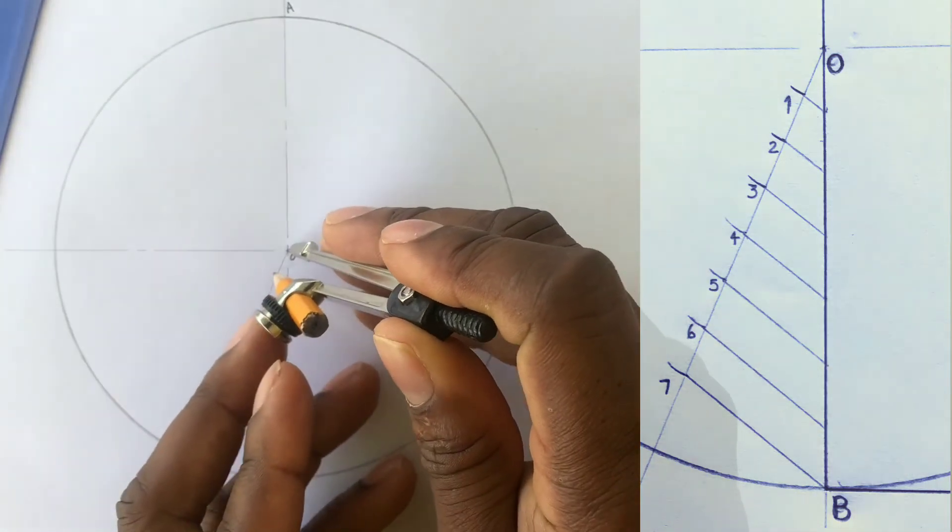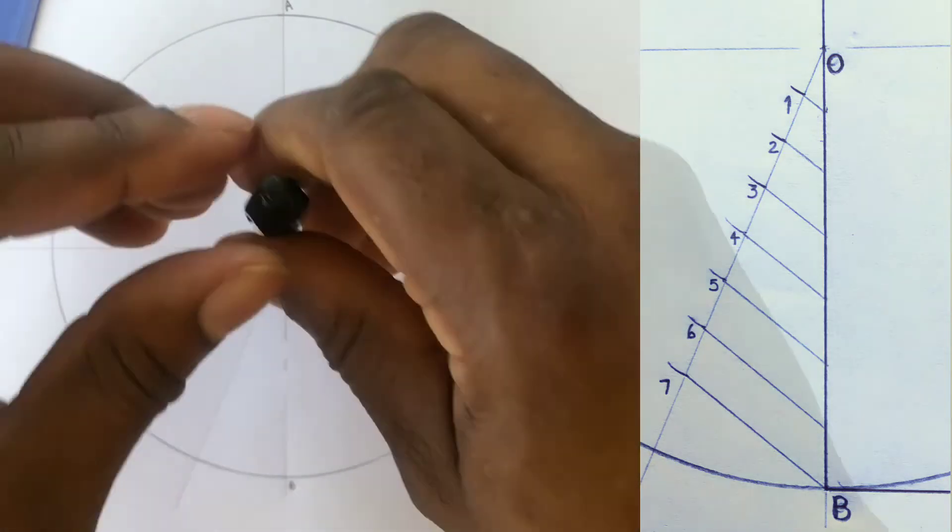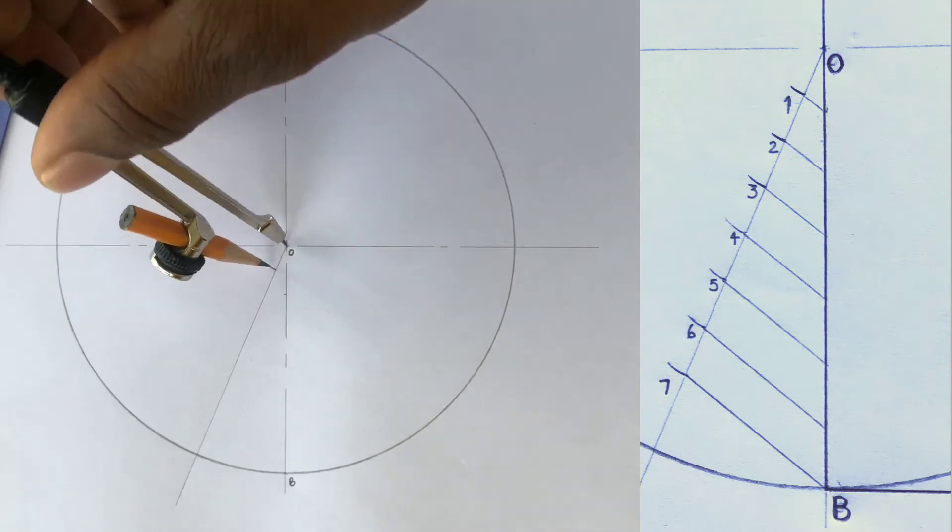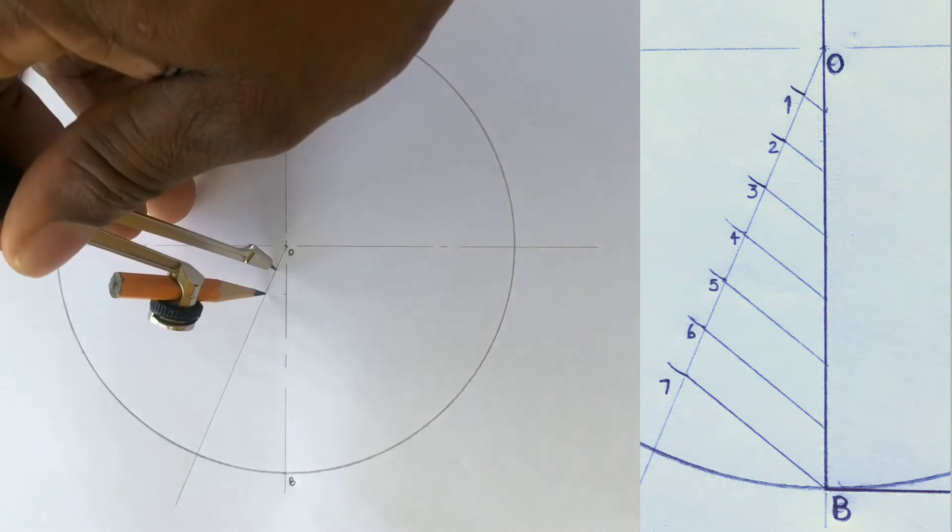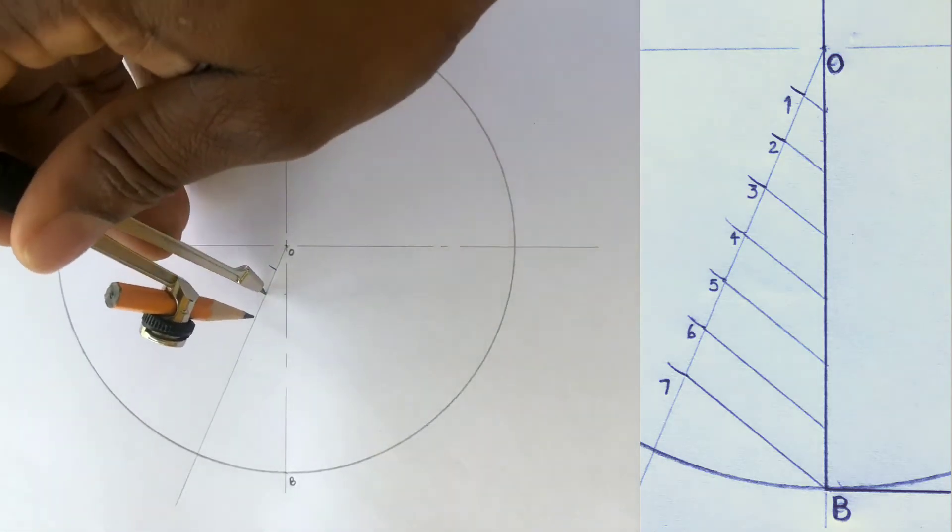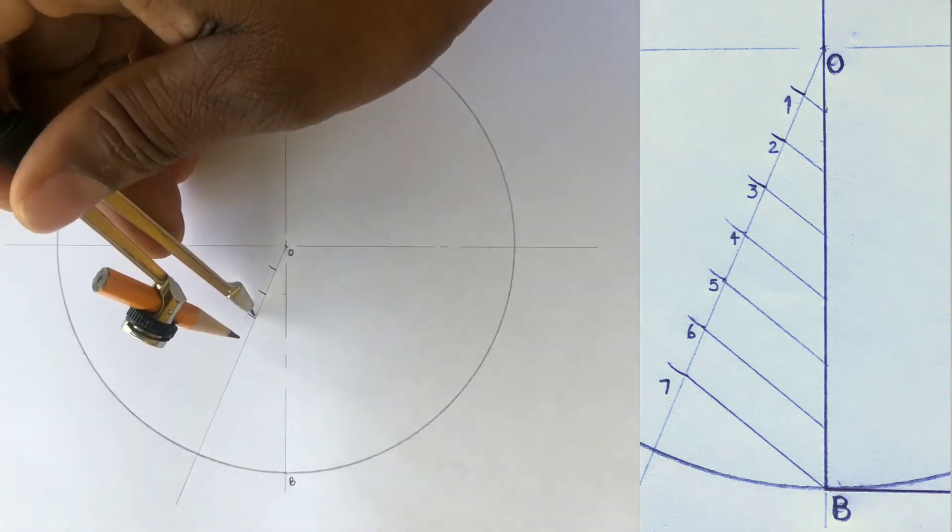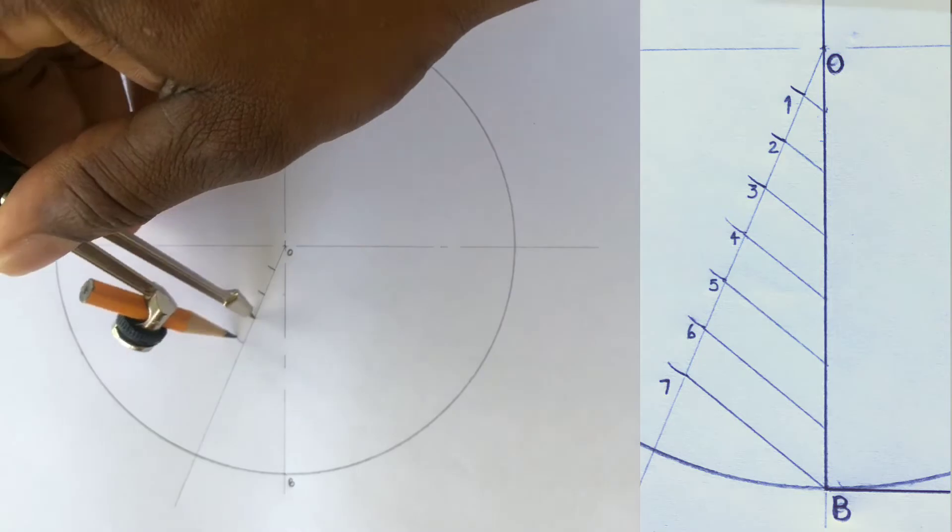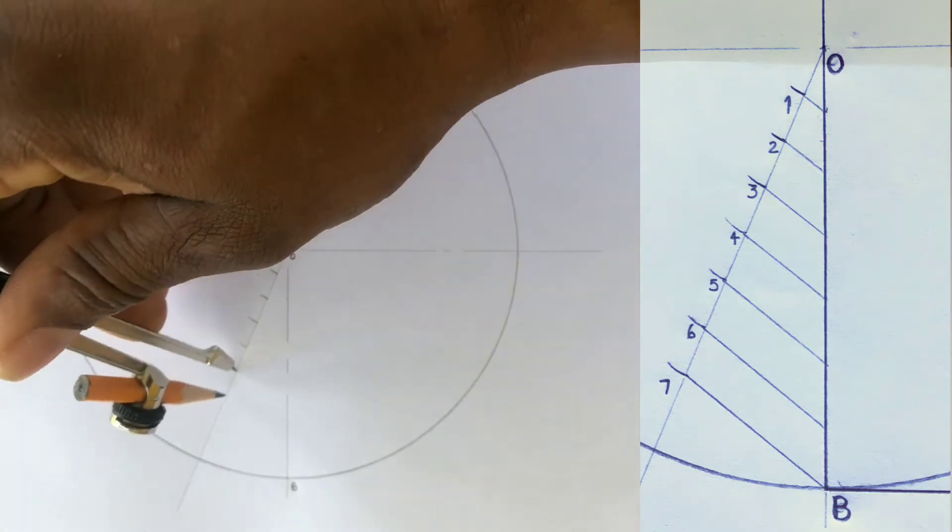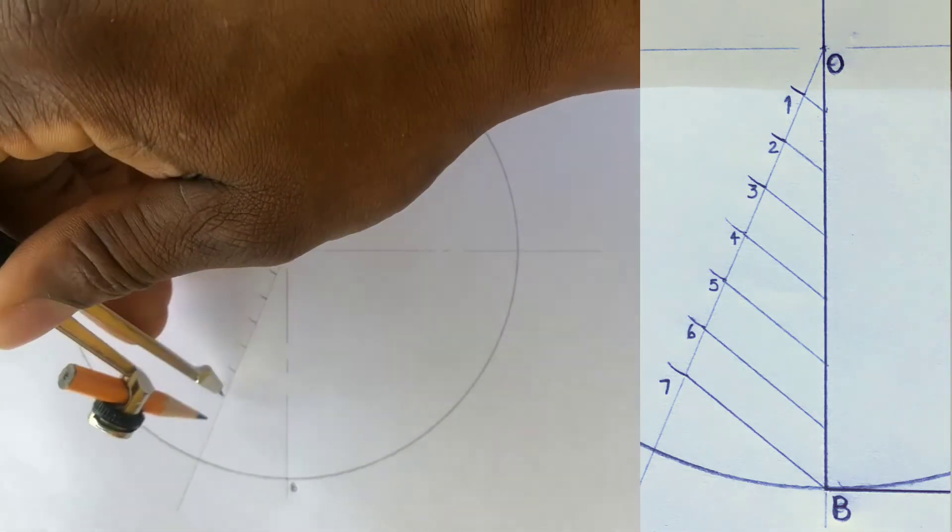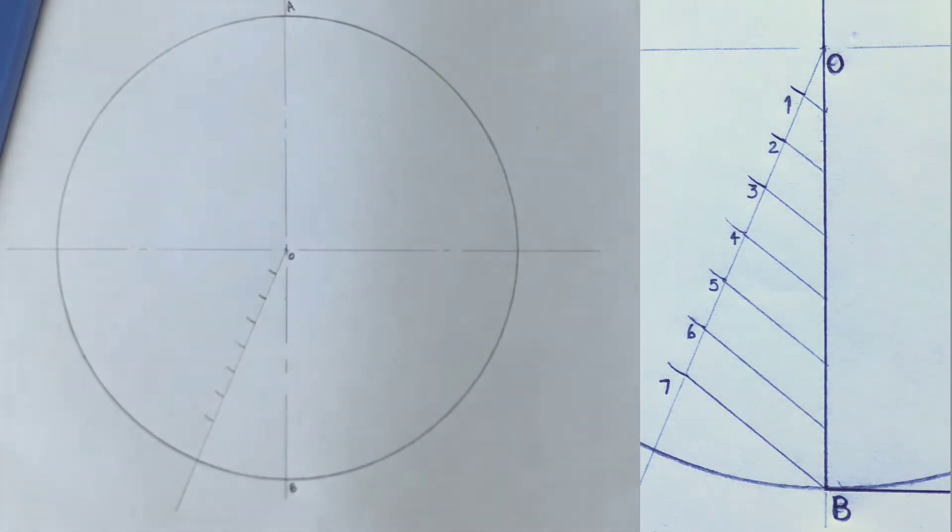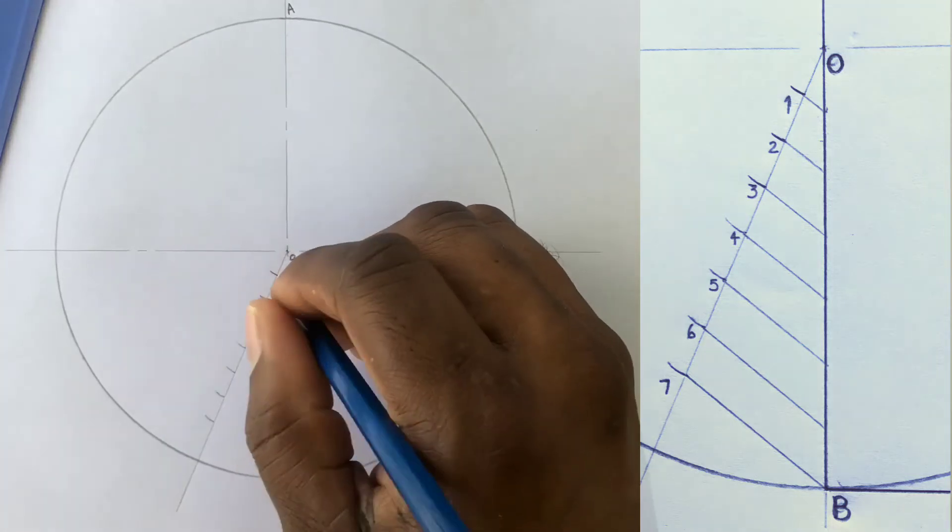And from O, you will scribe arcs to intersect this line. From each intersecting arc, you will scribe other arcs until you get seven divisions on this line. Label the divisions one to seven.